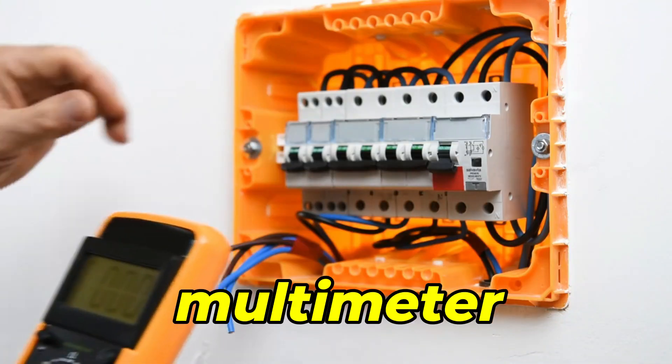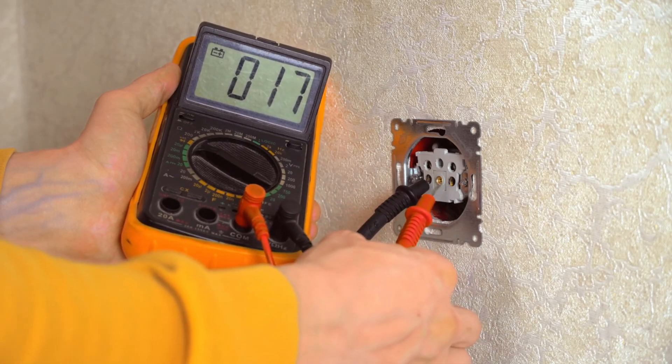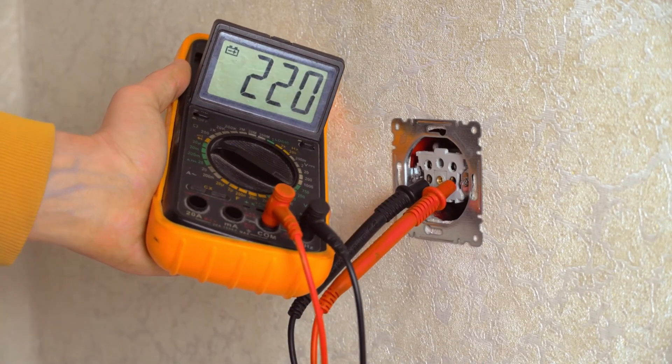Use a multimeter to test the continuity of the fuse. A functioning fuse should show a low resistance value, indicating that it is still intact.